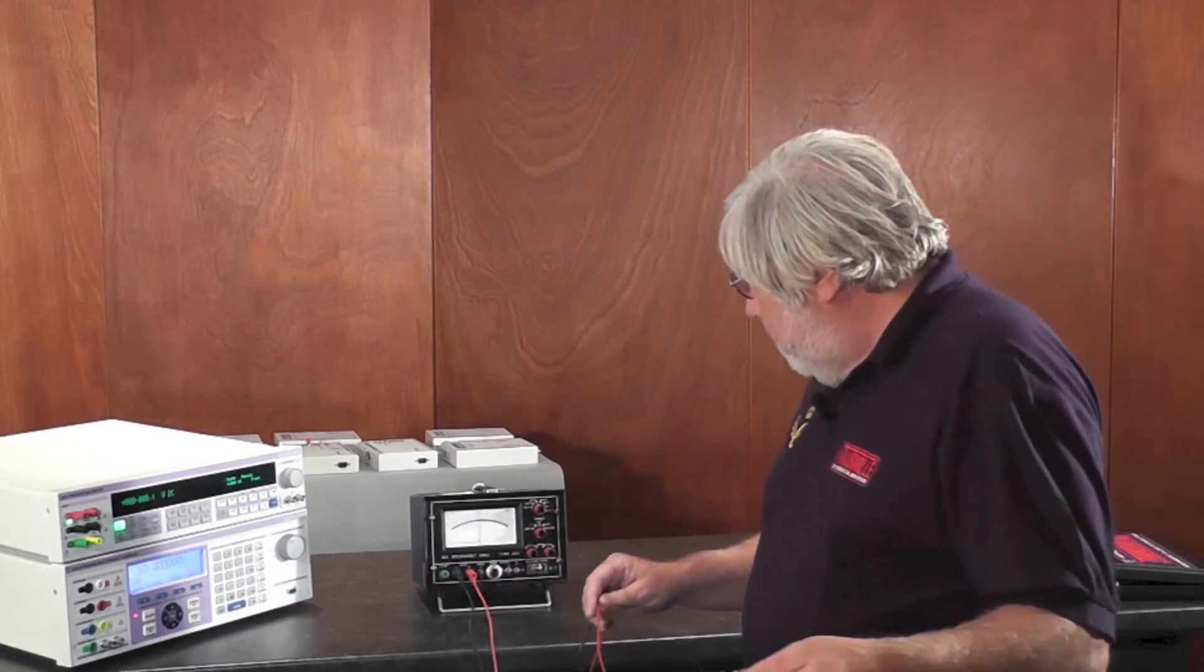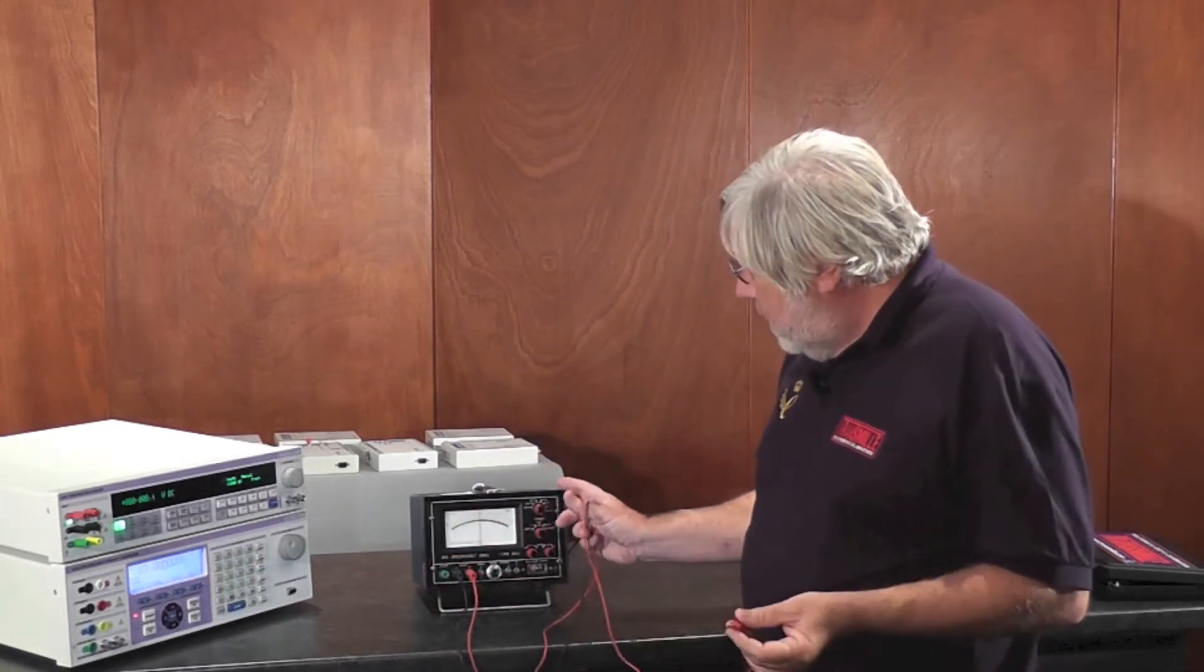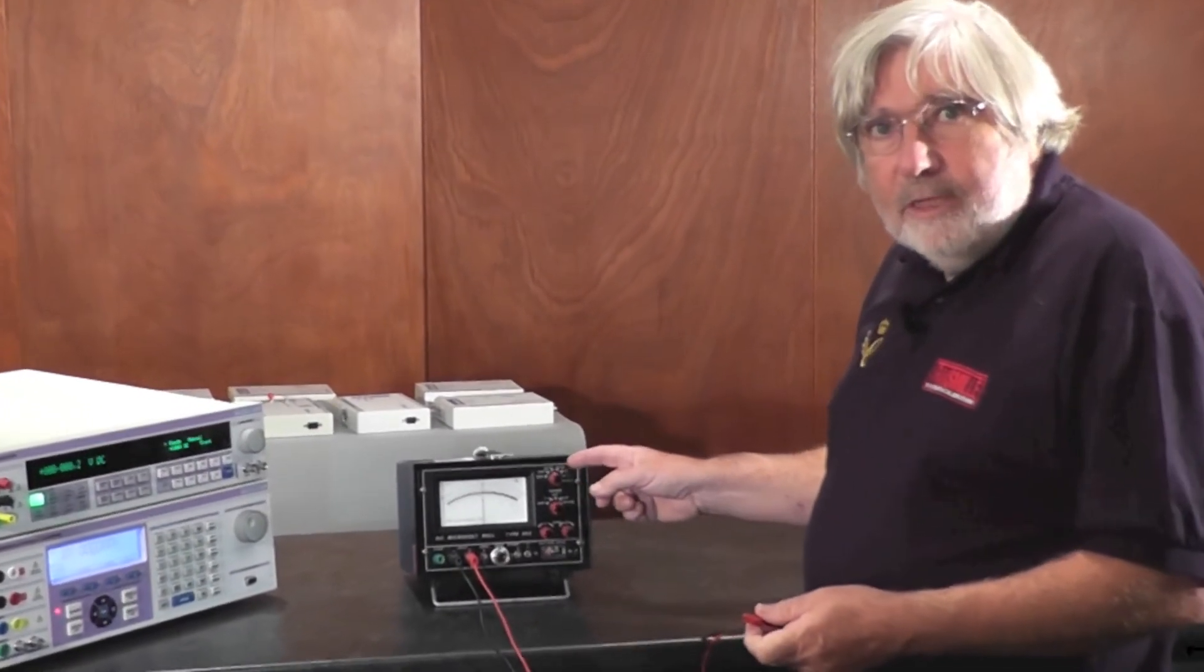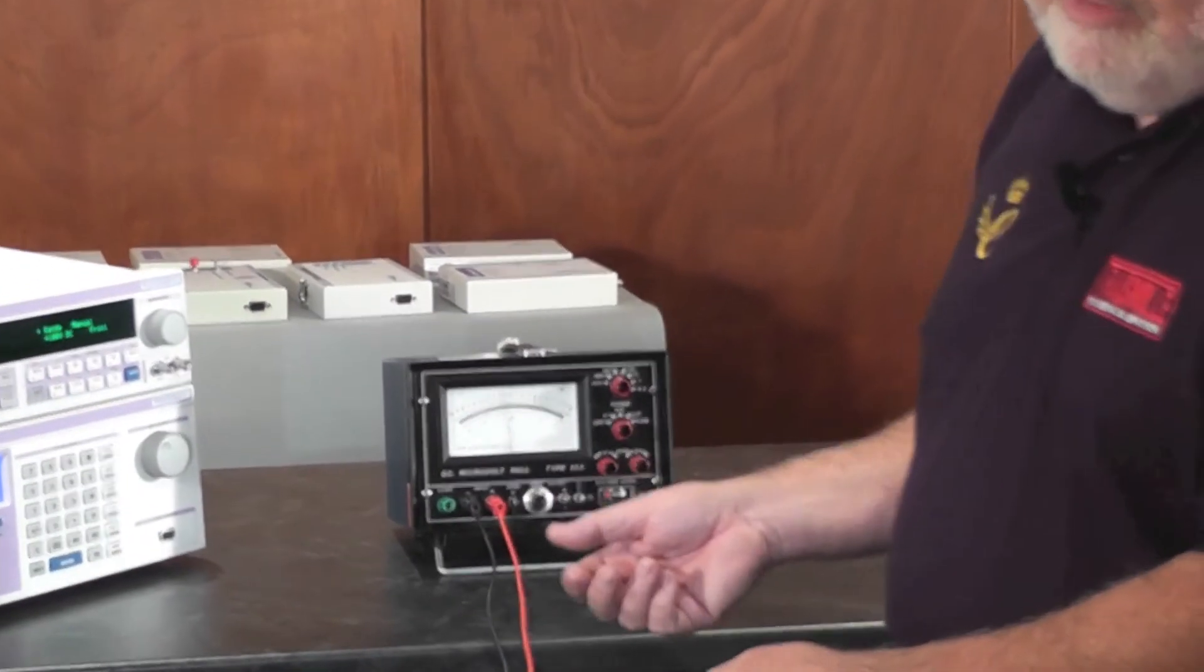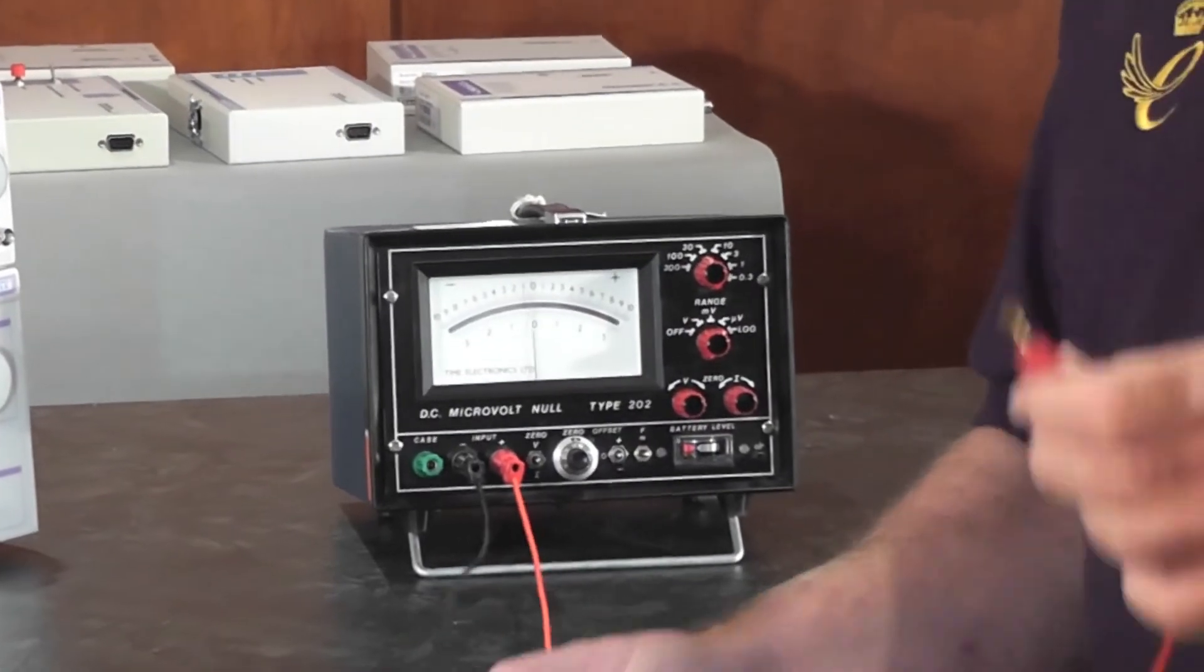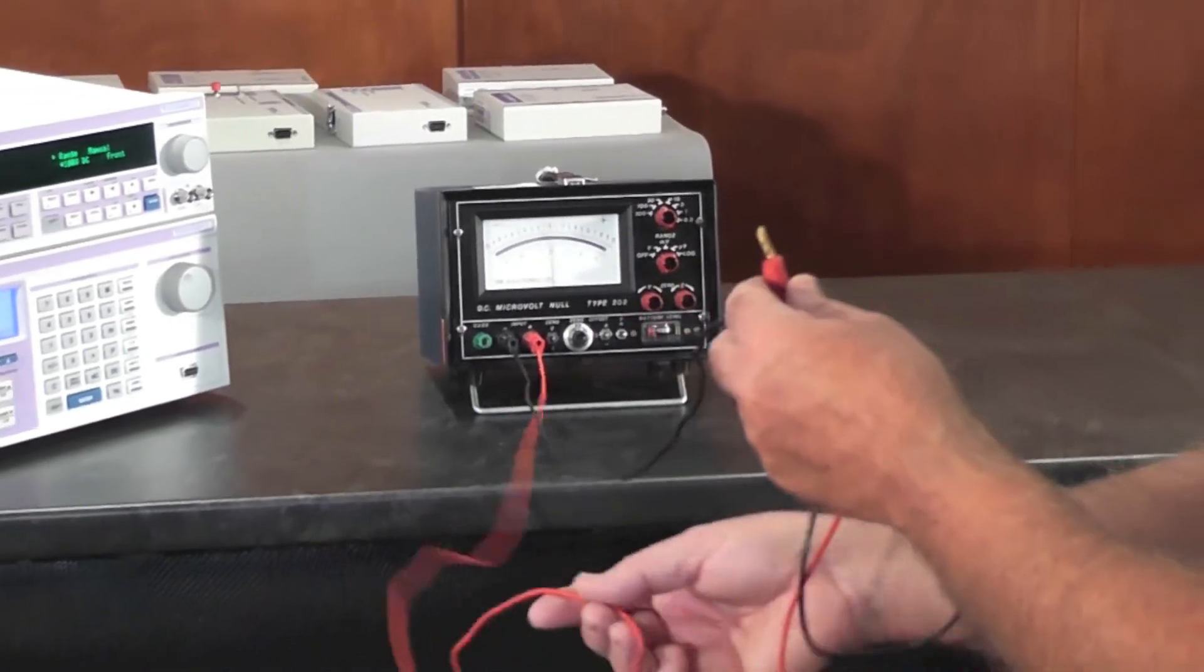Here I am, my leads are kind of long to sort of exaggerate the effect that we can see of the pickup you get in long unscreened leads. Again, using the little microvolt meter we had before, 30 microvolt sensitivity here on the range, 30 microvolts, 30 ppm in one volt. And if I just for a moment swing the red lead around...